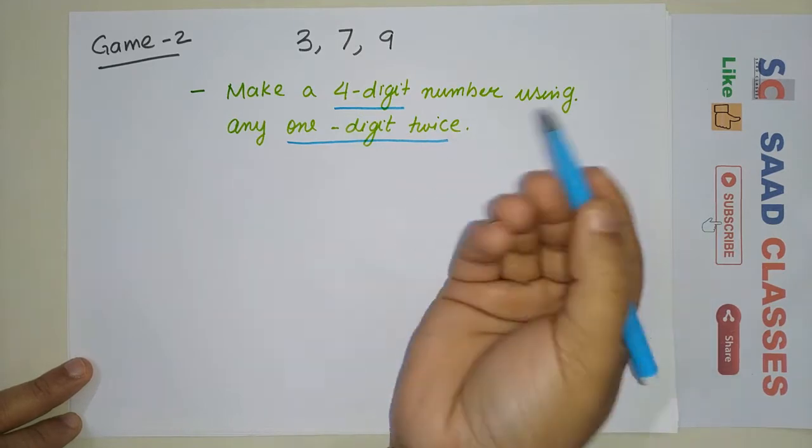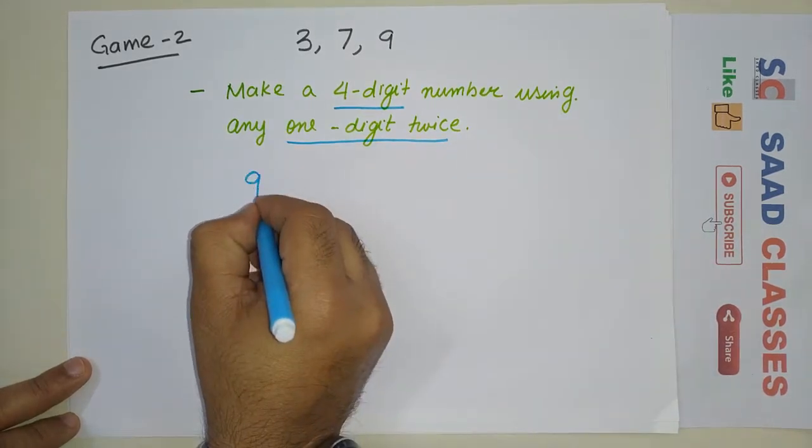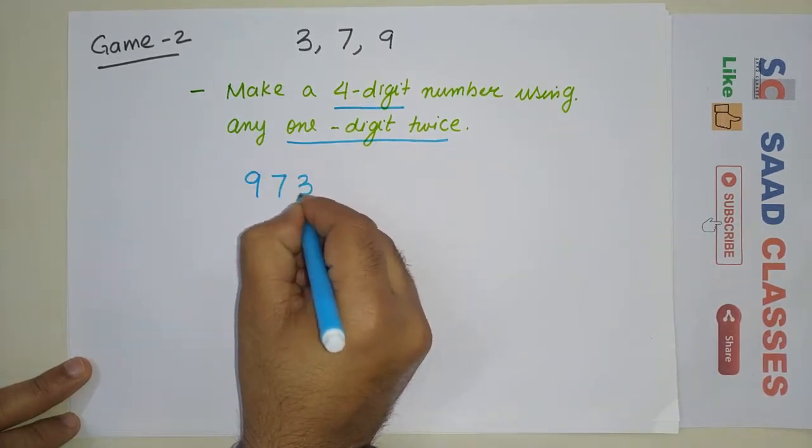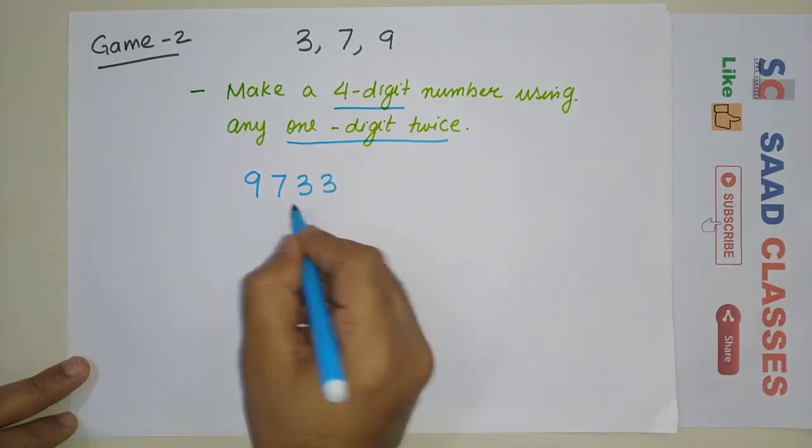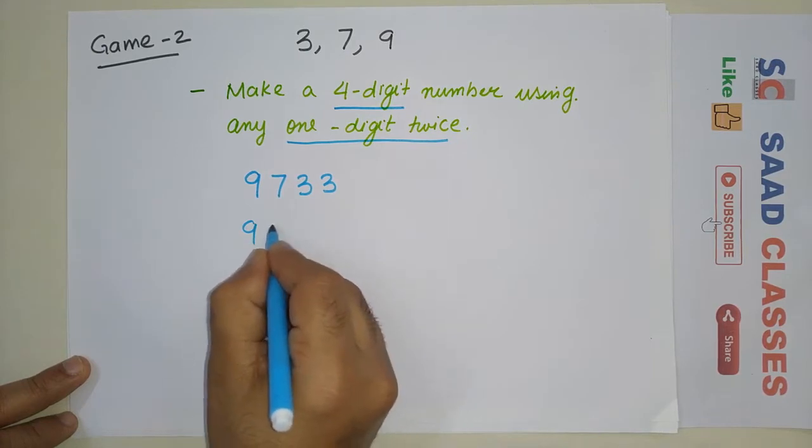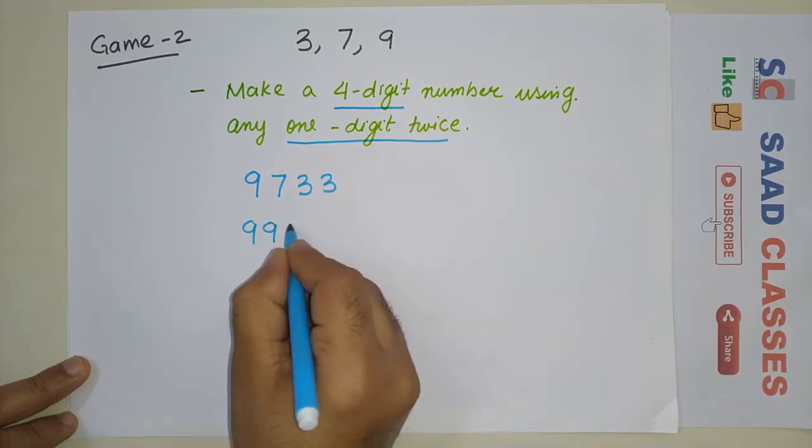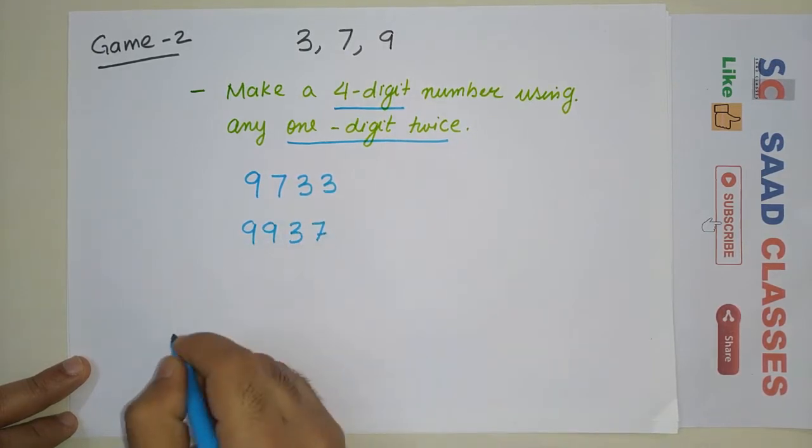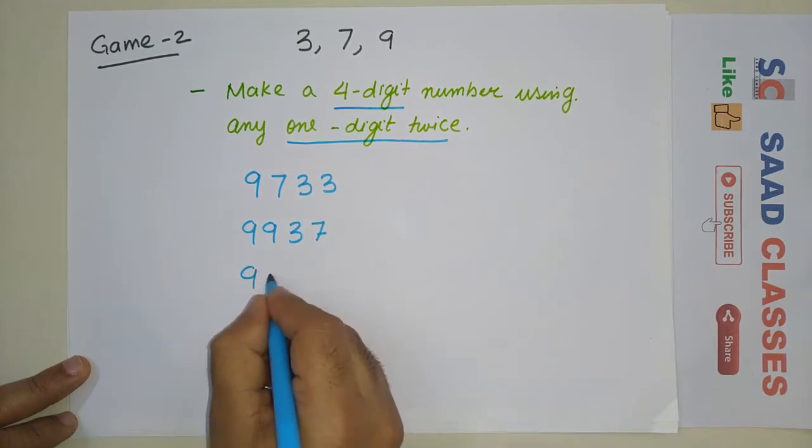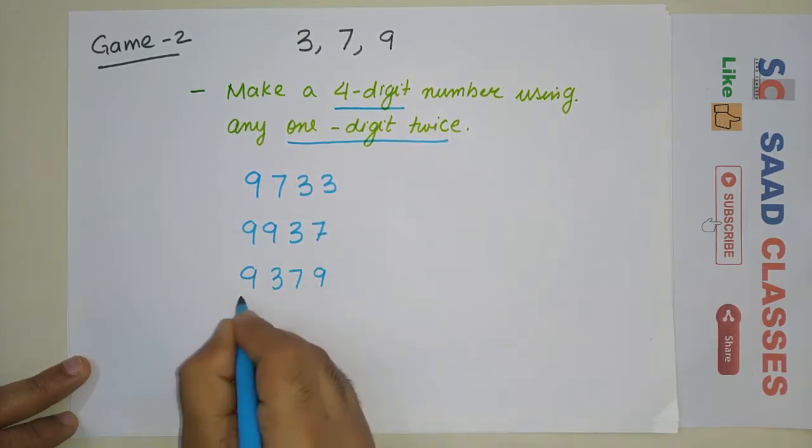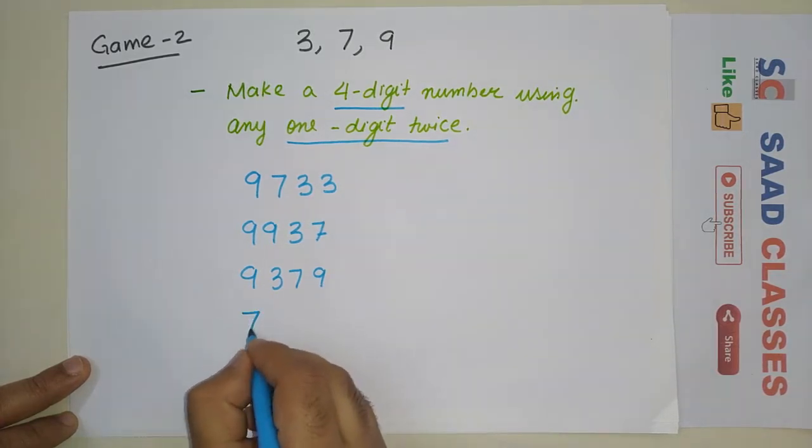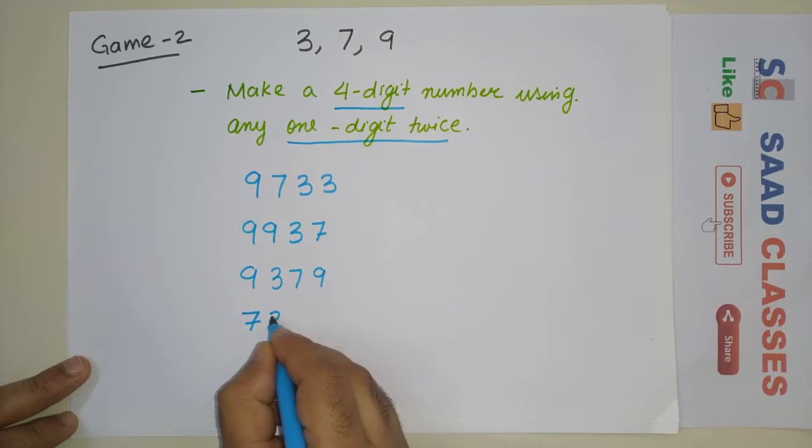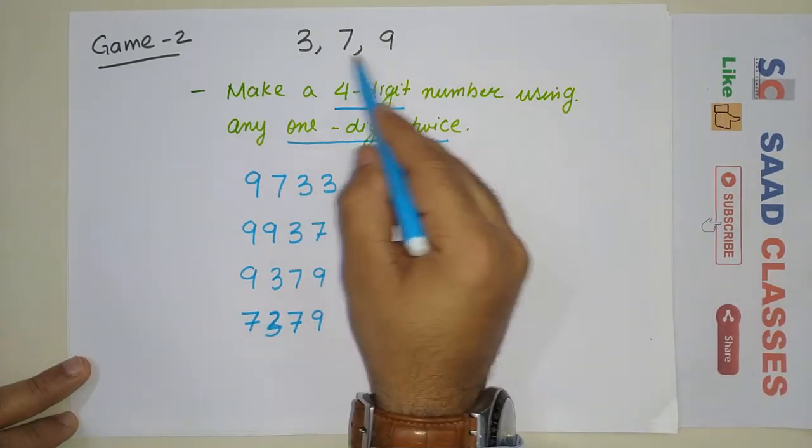So I can write 9733 - nine, seven, three, three as a four-digit number. Here I can write another number: 9937, with nine used two times. Let's write another: 7379. This is another number with three digits used twice.